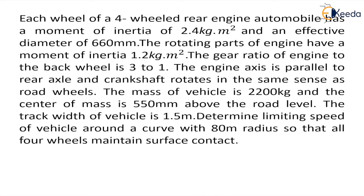In the question we are given that each wheel of a four-wheeled vehicle has moment of inertia IW = 2.4 kilogram meter square. The effective diameter is 660 mm, so radius will be 330 mm. The moment of inertia for rotating parts is given as 1.2 kilogram meter square and the gear ratio of engine to back wheel is given as 3:1.